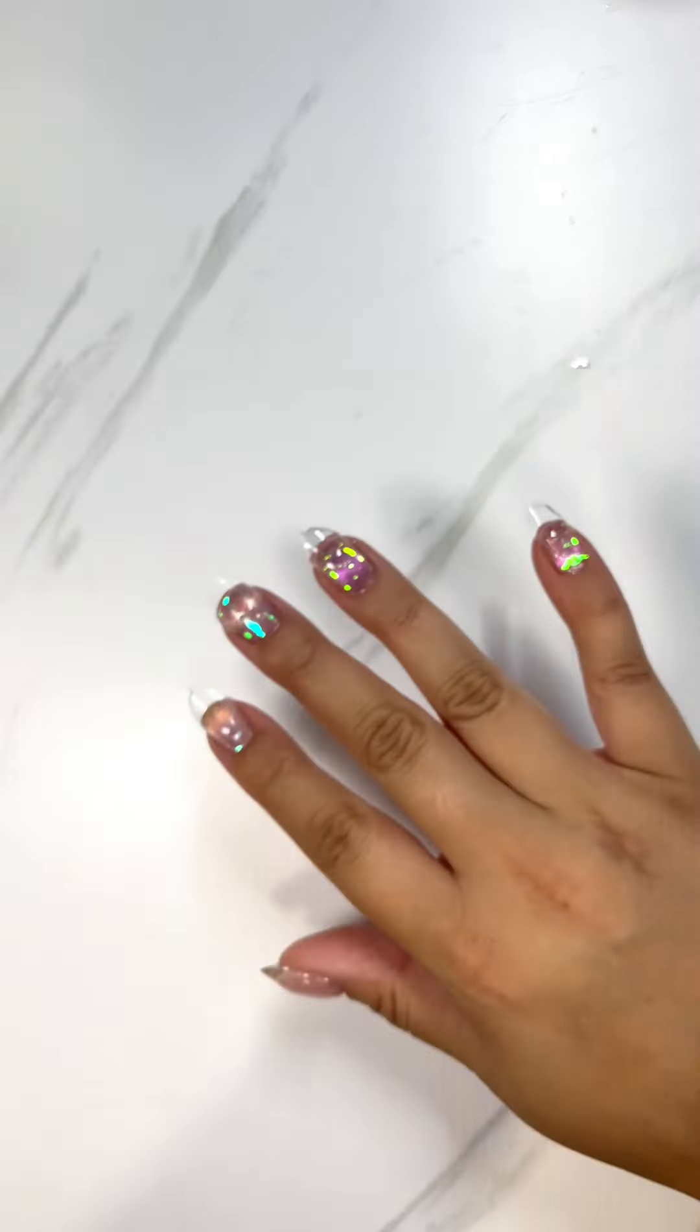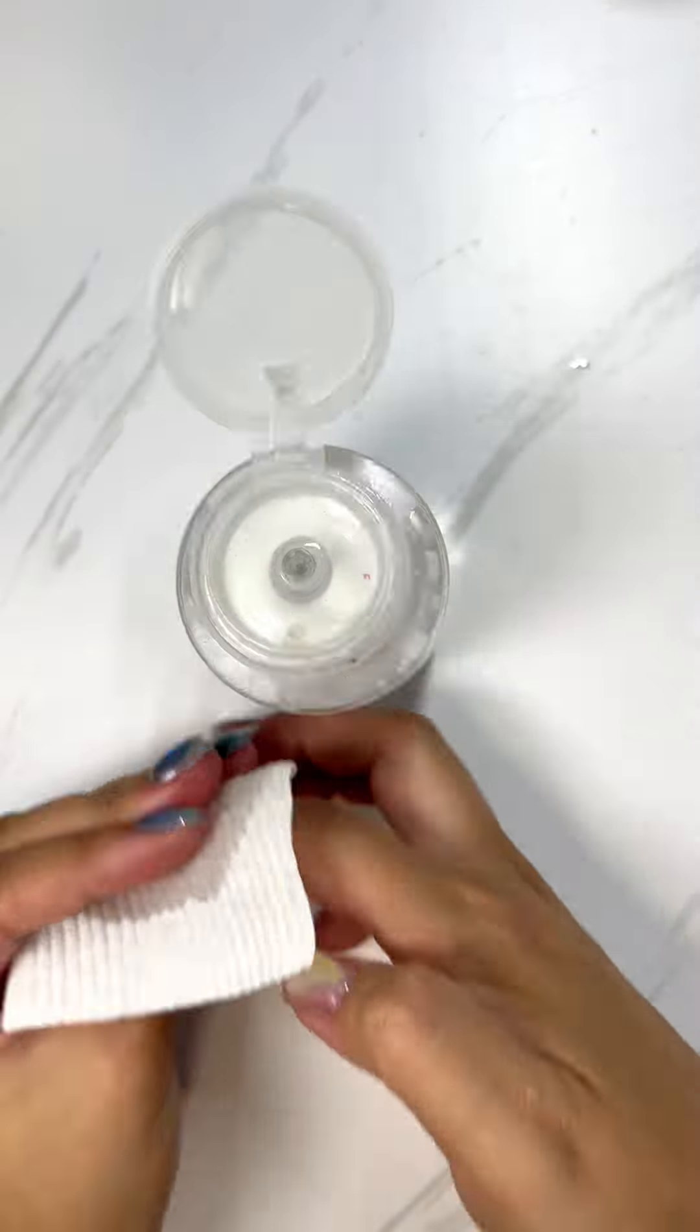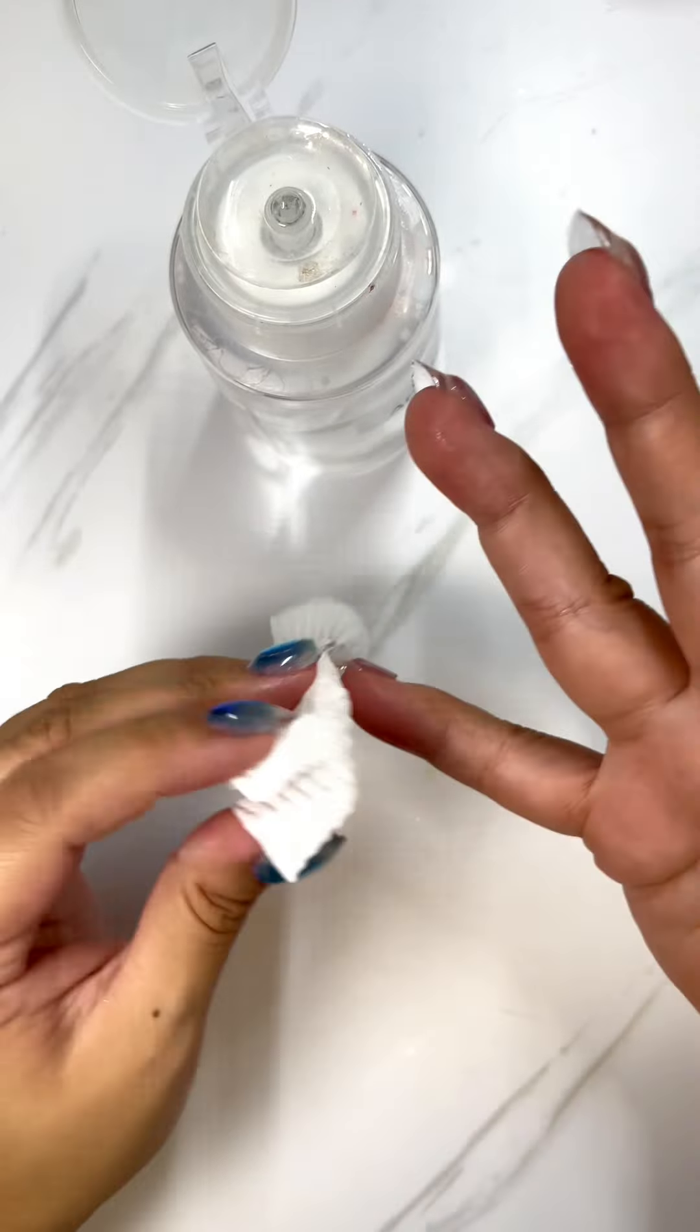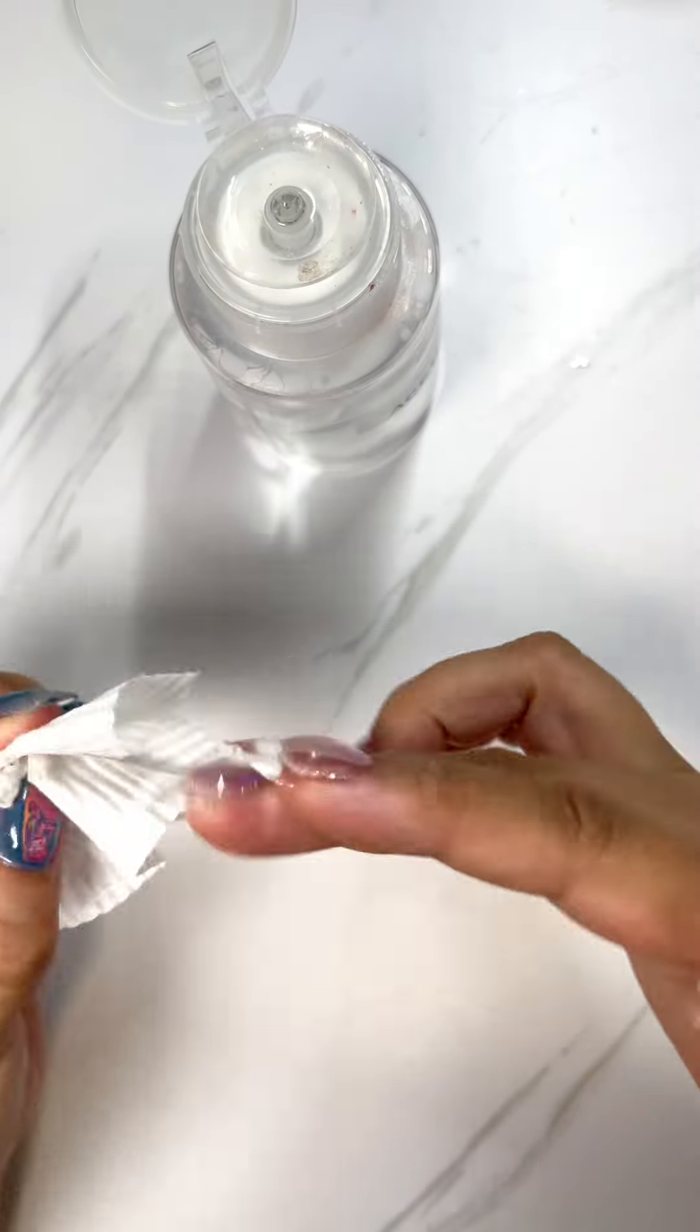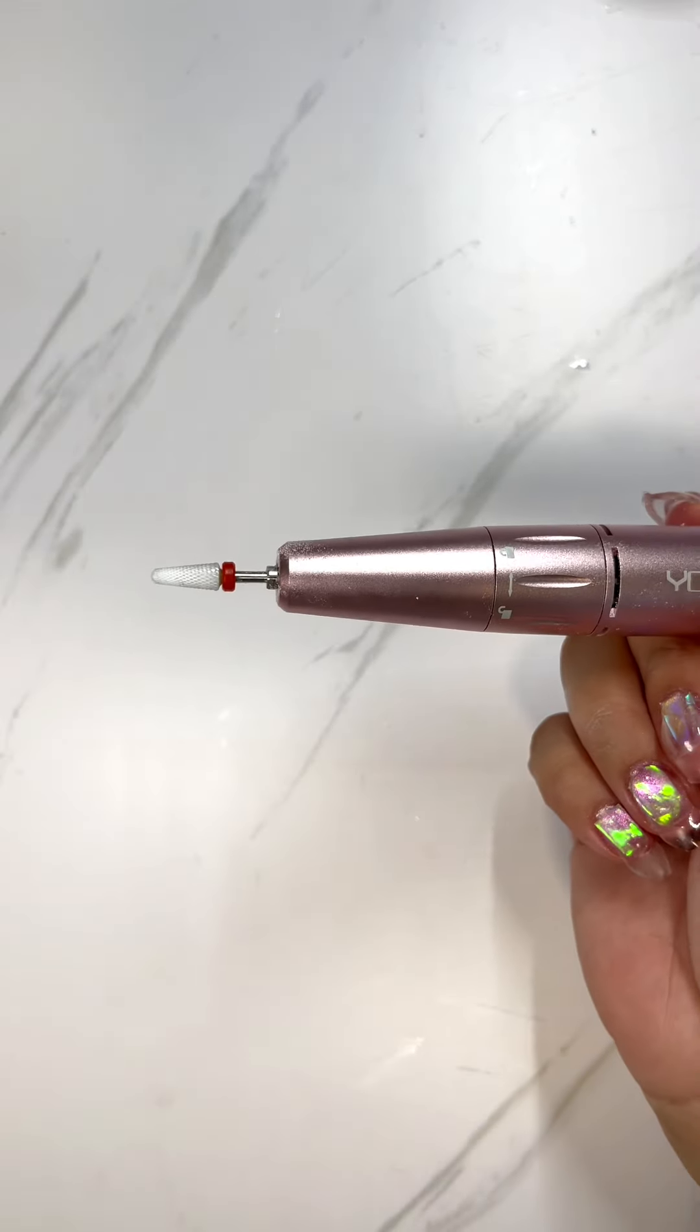There we go, so that's all the tips done. Before I filed and shaped them, I went and wiped off the inhibition layer with acetone as well as under the tips, just so that it doesn't gum up my drill bits.